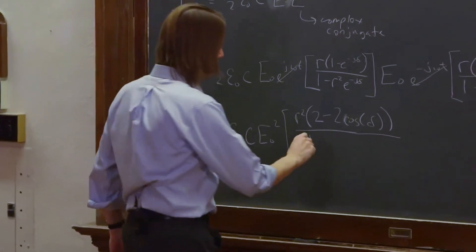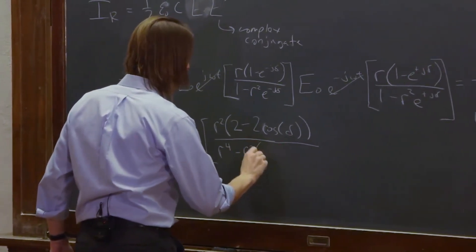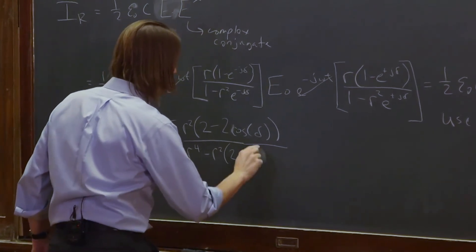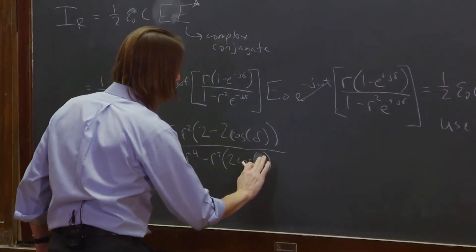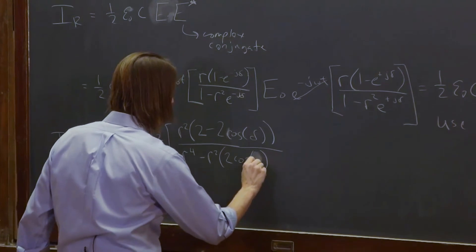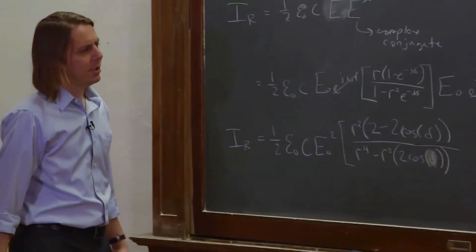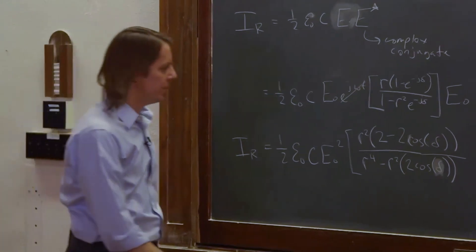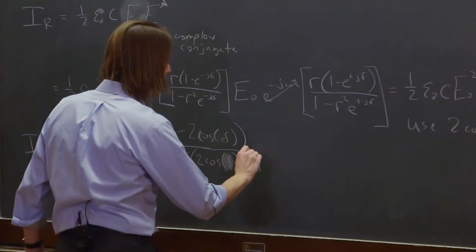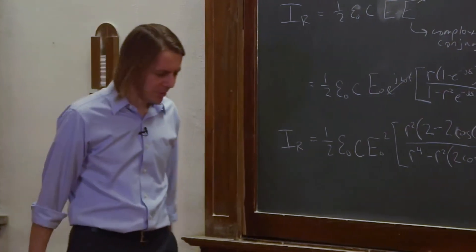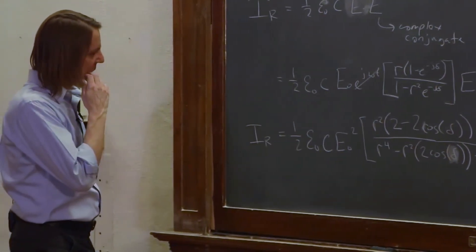So we got minus R squared 2 cosine delta. I can't write that delta this low. 2 cosine delta. And then I'm sure there's a 1. Just why not, right? Plus 1. Just to make sure we can't algebraically do anything else to it, we might as well have a plus 1 there. Okay.